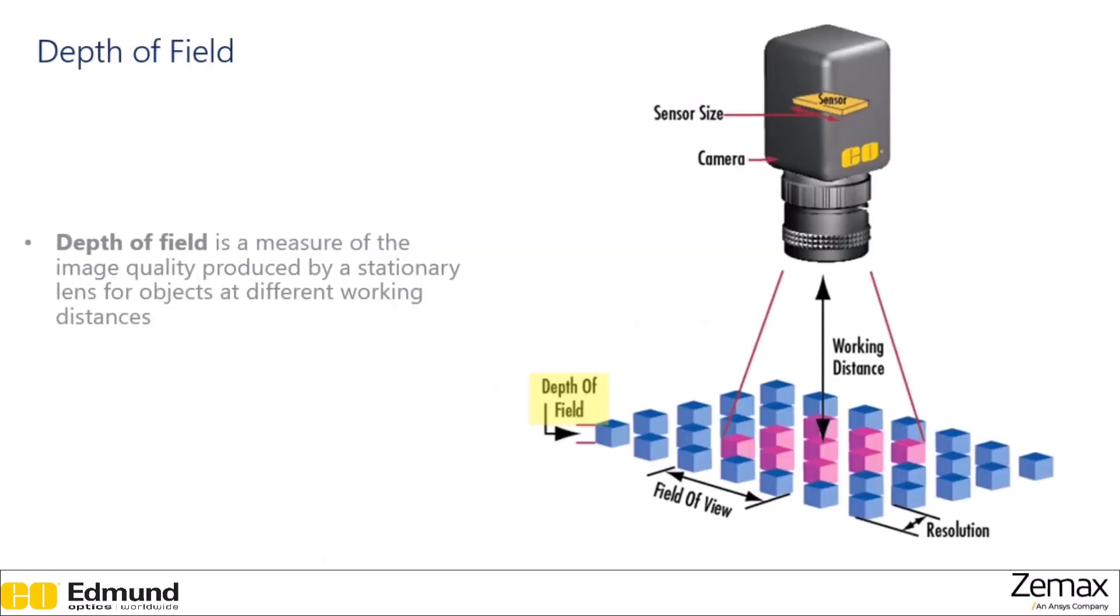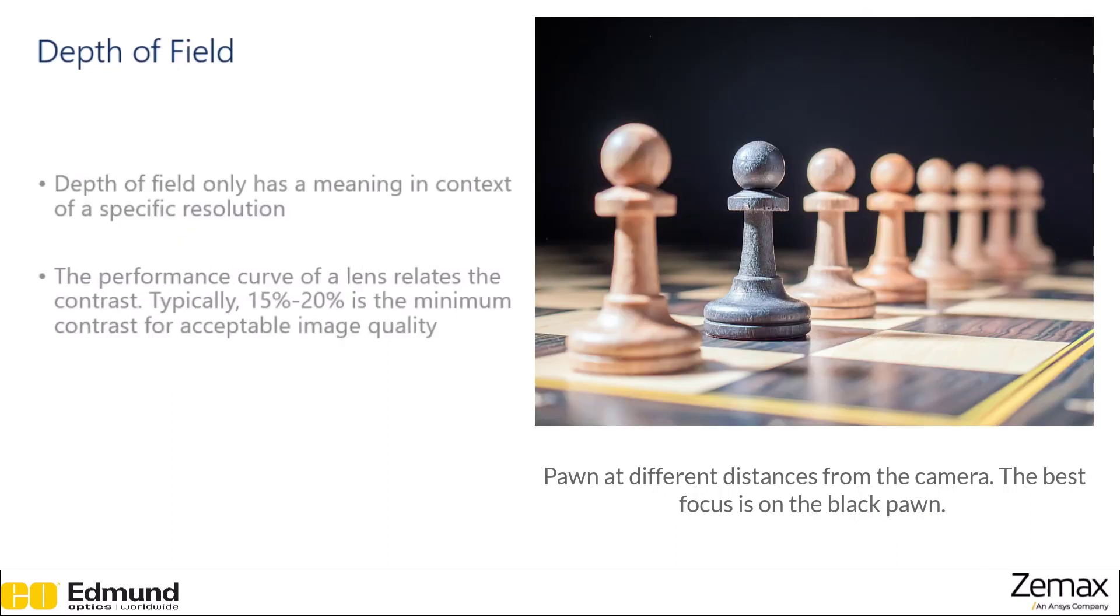Depth of field is a measure of the image quality produced by stationary lens for objects at different working distances. So what range of distances from the lens will you still be able to produce a quality image? We should note that depth of field doesn't really have any meaning except in context of a specific resolution. So for example, if we look at these blocks here, we can see they're getting more and more out of focus as they get further away from the lens. But what we consider a sufficiently good focus depends on the application.